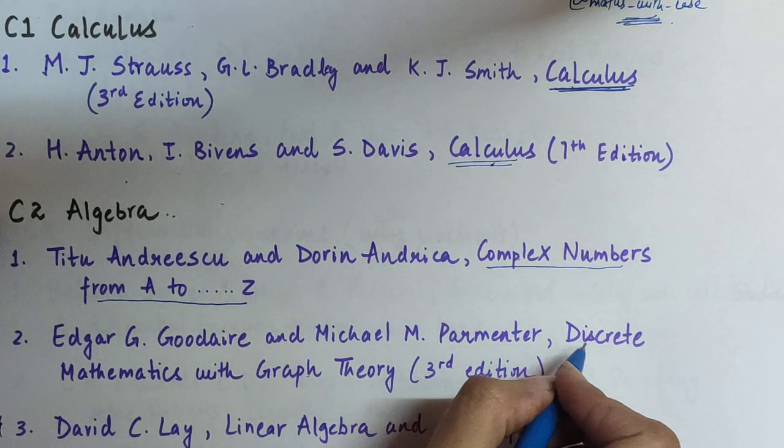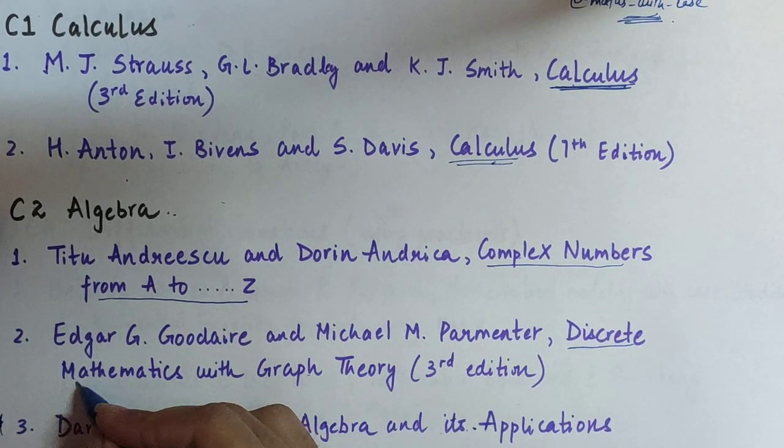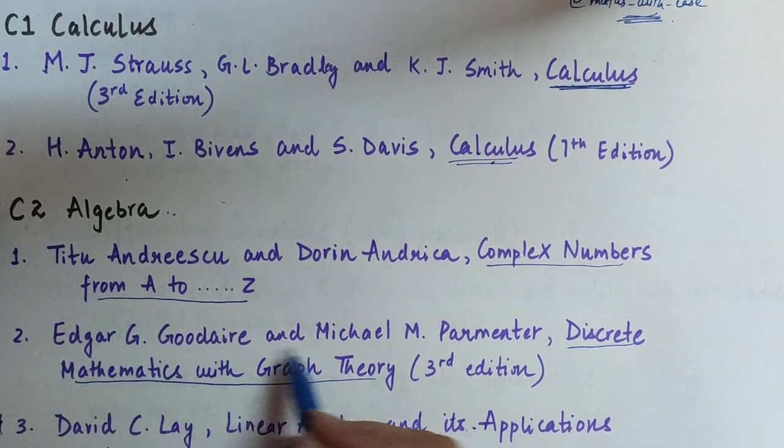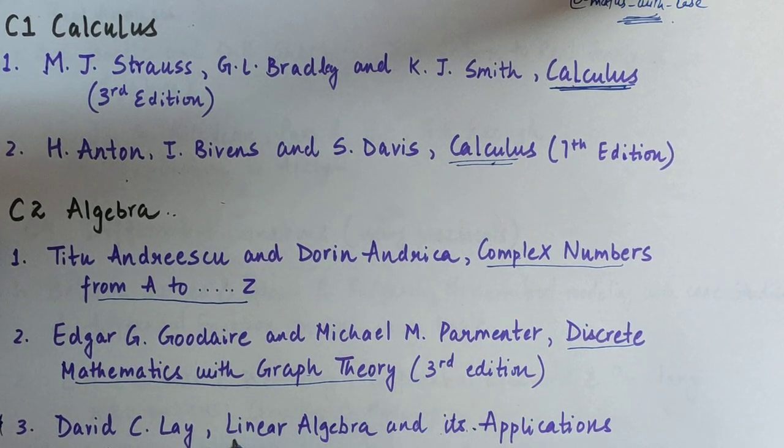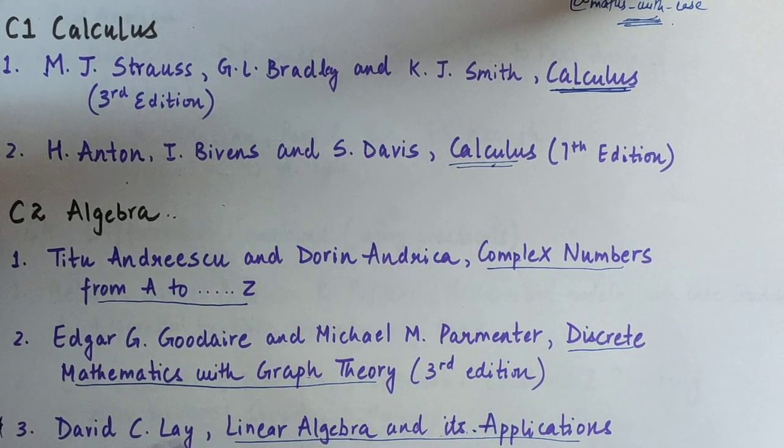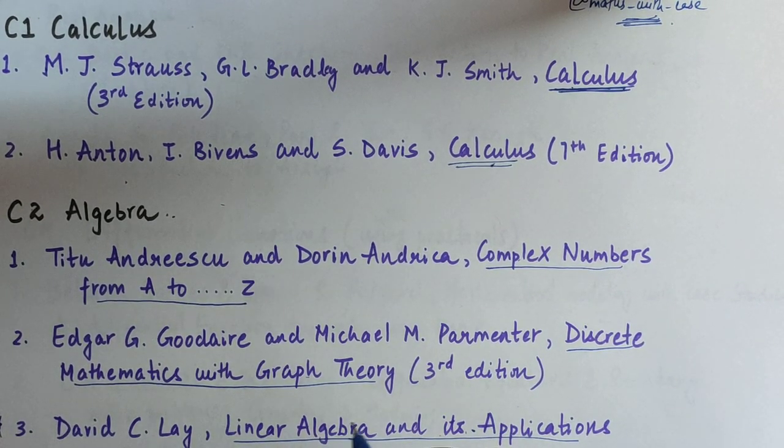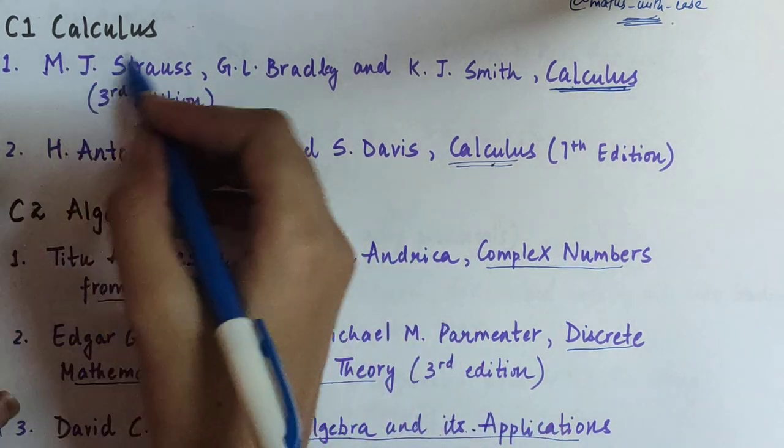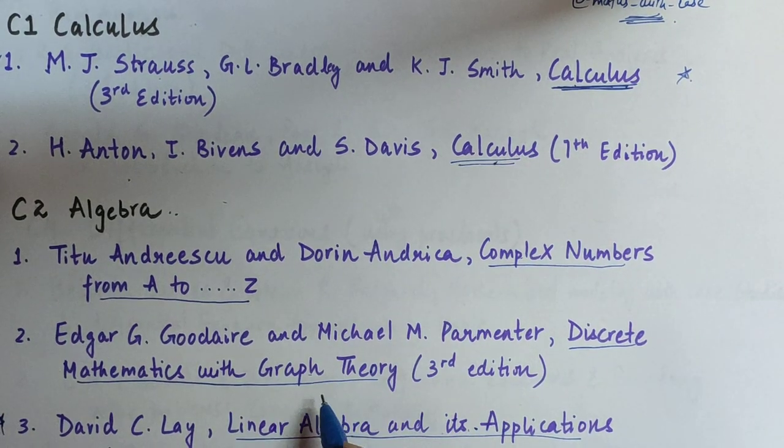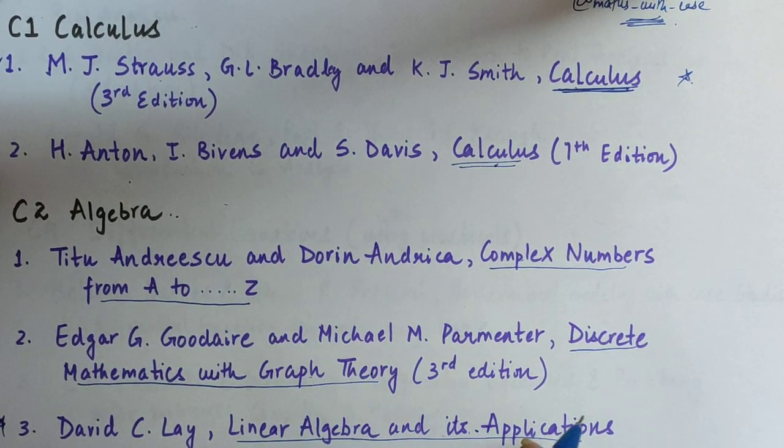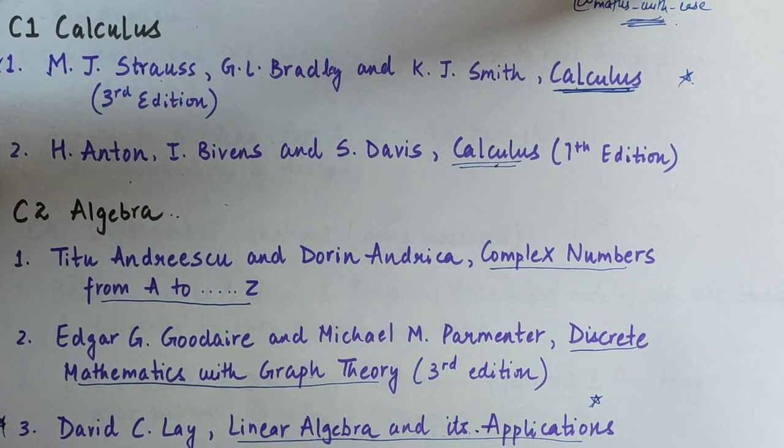The next book is Discrete Mathematics with Graph Theory by these particular writers. And the third book is Linear Algebra and Its Applications by David C. Lay. Now coming to the important books: for Calculus, M.J. Strauss is a very important book, and for Algebra, Linear Algebra and Its Applications is an important book.